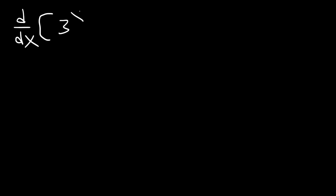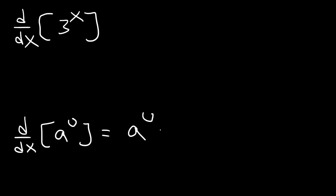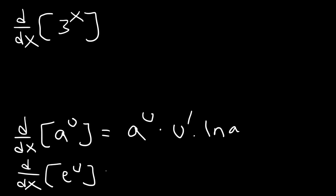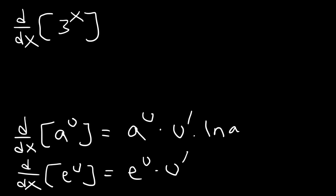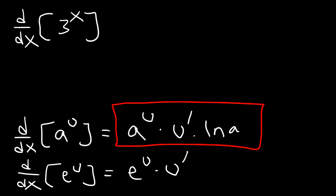Sometimes the base may not be e — it might be something else. For instance, what is the derivative of 3 raised to the x? The derivative of a raised to the u is a to the u times u prime times ln a. Comparing that to e to the u: it would be e to the u times u prime times ln e, but the natural log of e is 1, so that part is not needed. You need to use the ln a formula for everything other than e. So for 3 to the x, the derivative of x is 1, and then times ln 3.